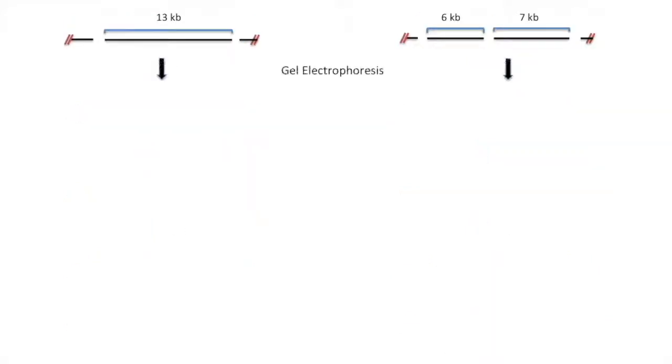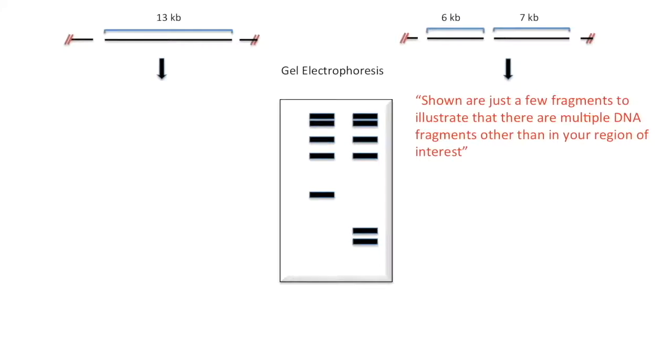We then gel electrophorese. Since this was on a gel, we can visualize these bands at 13 kb on the left and 7 and 6 kb on the right.